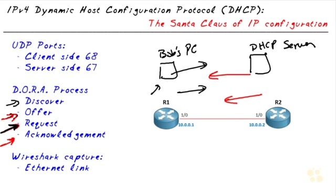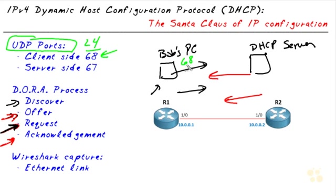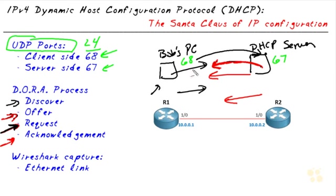The packets going back and forth carry UDP at layer 4. When Bob's PC makes a request, it uses source port 68 — UDP port 68. On the server side, it uses UDP port 67. So the request goes from port 68 to port 67, and the offer coming back is UDP source port 67 going back to UDP port 68.